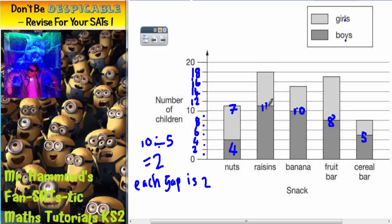For raisins, it goes from 11 to 18, which is 7 again. For banana, it goes from 10 to 15, so that's 5. For fruit bar, it goes from 8 to 17, which is 9. And for cereal bar, it goes from 5 to 8 which is 3.